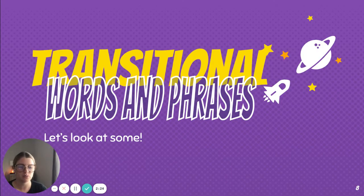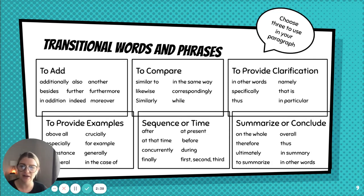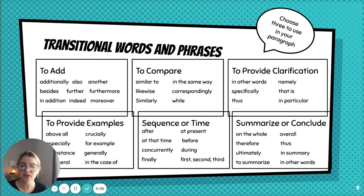Let's look at some transitional words and phrases. Here are just a few from the actual document — if you download your copy, you'll see the full list. To add, you can use: additionally, also, another, besides, further, furthermore. If you're comparing something: likewise, similar to, correspondingly, while, in the same way. To provide clarification: in other words, this means, namely, what I'm saying is, in particular. To give examples: above all, crucially, for example, in the case of, generally, especially.